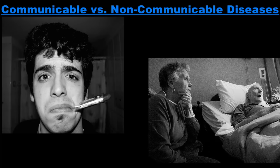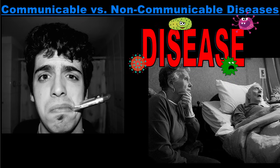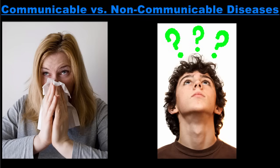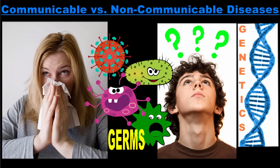Everyone experiences illness now and then. In fact, part of what makes us human is that we are susceptible to disease. If you've ever been sick, and most likely you have, you've probably found yourself wondering how you got sick in the first place. There are many causes of disease, from germs to genetics, but all diseases can be placed into one of two categories: communicable or non-communicable.